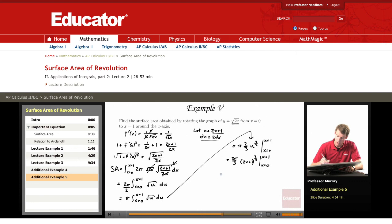And so this is 2 pi over 3. Now if you plug in x equals 1 to 2x plus 1, that turns into 2 times 1 plus 1, so 3 to the 3 halves, minus x equals 0 in there into 2x plus 1, just gives you 1 to the 3 halves.